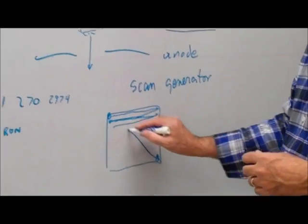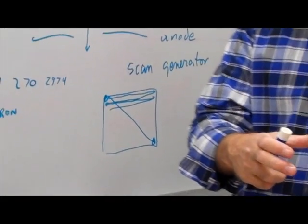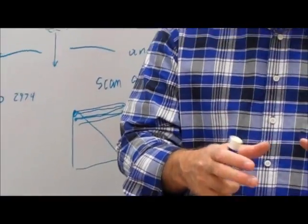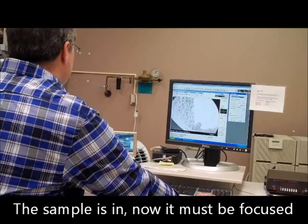One down, and then it gets to here, and then flies back and starts that again. So it traces out a box on the surface of the sample. So everywhere that the beam hits the sample, there's a signal that's produced.